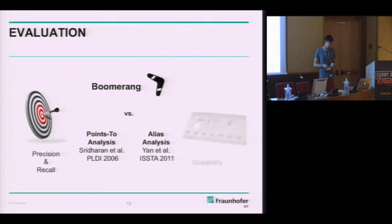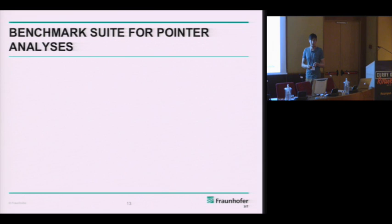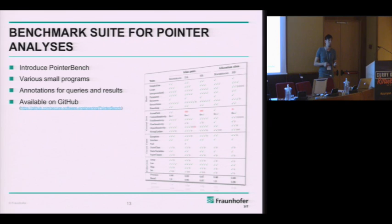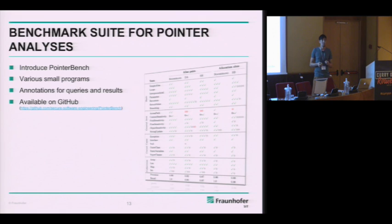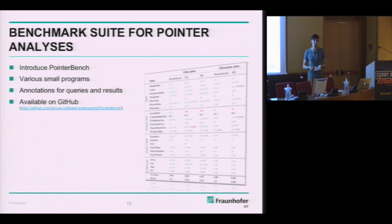For precision and recall, there was a problem: there is no existing benchmark suite for pointer analysis on which you can compare. Therefore, within this work, we decided to create a benchmark suite called PointerBench for evaluating pointer queries. These are small programs on which you can easily describe pointer information — both points-to and alias information. We annotated all these programs with queries and results, made it publicly available on GitHub, and welcome contributions to make comparison of pointer analyses easier in the future.